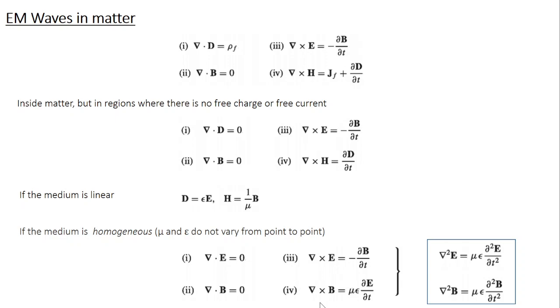Similarly, when you do that for the fourth equation, you get del square B equal to mu epsilon dou square B by dou T square. We have done exactly the same procedure for free space. You got a similar equation. Just that instead of mu epsilon, you had mu naught epsilon naught.